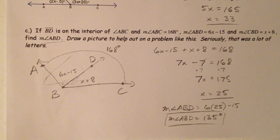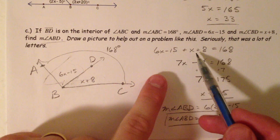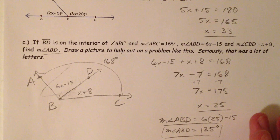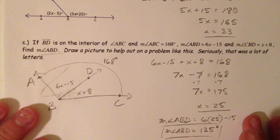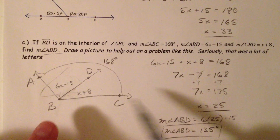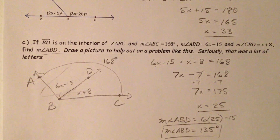So there you have angles — how to measure them, the angle addition postulate, and how to set up equations. Also, things to look out for are bisectors. Angles can be bisected, which means you set your two expressions equal to each other.